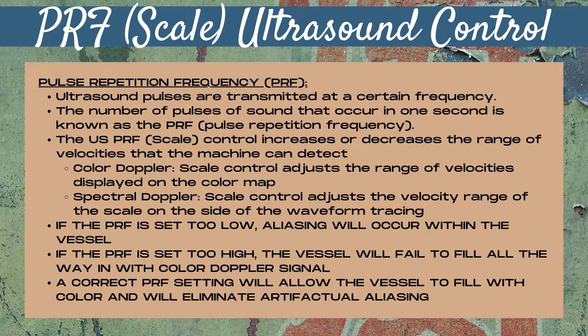When the PRF control is set too high, the vessel is going to fail to fill all the way in with a color doppler signal. A correct PRF or scale setting will allow the vessel to fill with color and will eliminate artifactual aliasing. With spectral doppler, when the scale control is set too low the waveform is going to wrap around. If the PRF is set too high, the waveform will be very tiny and hard to visualize.